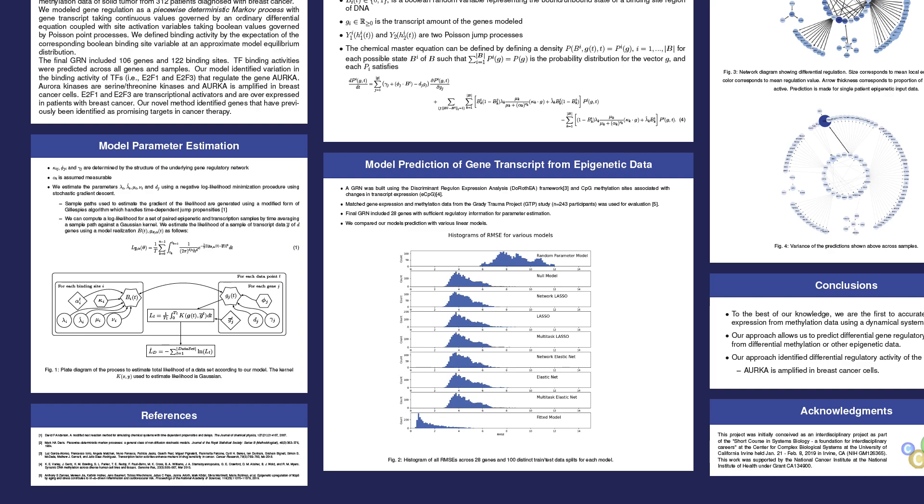We estimate parameters using a stochastic gradient descent method. We take the epigenetic data as model input and compute the likelihood of the paired transcription information in the model's equilibrium distribution using a modified form of Gillespie's algorithm.